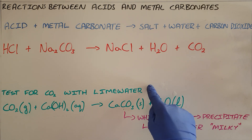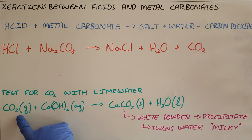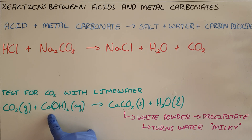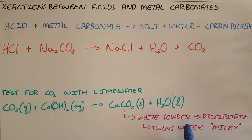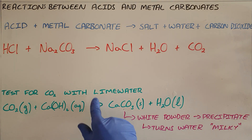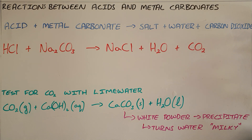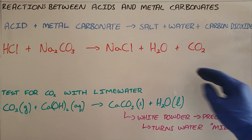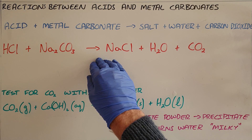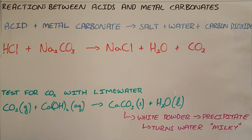The lime water test for carbon dioxide works because lime water, when it reacts with carbon dioxide, forms the following reaction: carbon dioxide combines with calcium hydroxide to form calcium carbonate, which is a white powder. This forms a precipitate in the solution that makes the clear lime water turn milky, and that is how we know that carbon dioxide is present. We are going to simultaneously perform the acid plus metal carbonate reaction and test that it produces carbon dioxide with the lime water test.